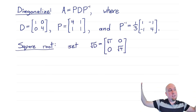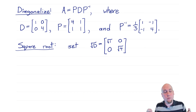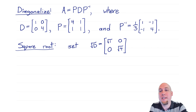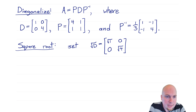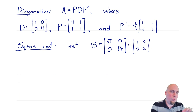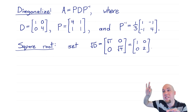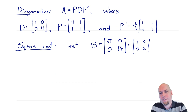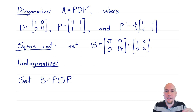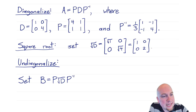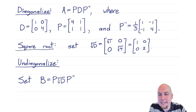Next, I want to construct B, the square root, from this diagonalization. I take the diagonal matrix D and just square root its diagonal entries entry-wise: √1 = 1 and √4 = 2, so √D = [[1, 0], [0, 2]]. That's the diagonal piece in the diagonalization of the square root matrix. Then I undiagonalize: keep P and P inverse the same but use √D in the middle — compute P · √D · P inverse — and that gives me my square root matrix B.